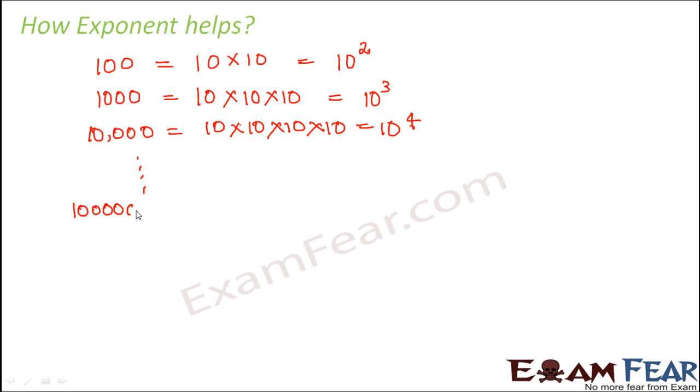In similar way, if you talk about a number which has maybe 10 zeros, that number can be very well written as 10 to the power 10. Now you tell me which is more convenient, writing this or writing this? So definitely writing 10 to the power 10 is more convenient. You see that these are kind of easier representations of numbers.